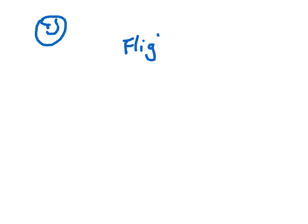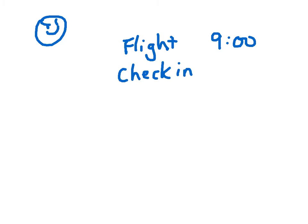What information did I give you for the problem? I basically told you my flight time — my flight time was 9 a.m. And then I also told you my check-in time: I wanted 2 hours to check in, 2 hours prior. So that's 2 hours before that, which puts me at 7 o'clock a.m.